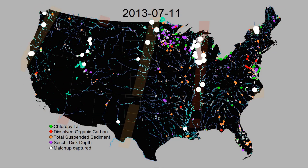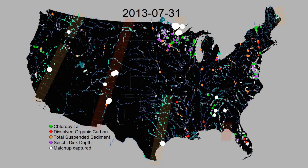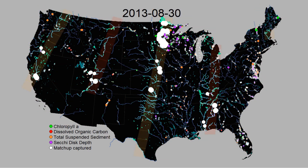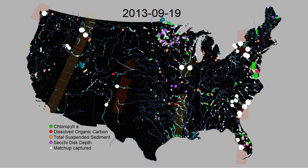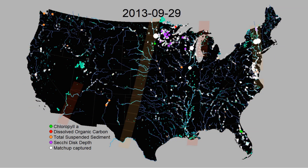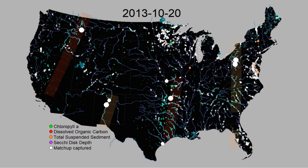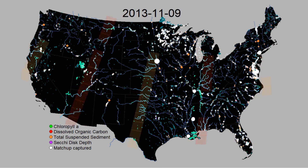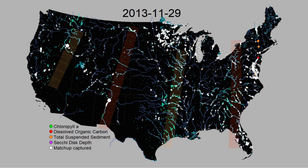Here the video flashes white when a Landsat image is taken over a water body at the same time that someone takes a sample. By integrating the Water Quality Portal, LAGOS, and the Landsat archive, we created the largest such dataset ever assembled, with more than 600,000 matchups.